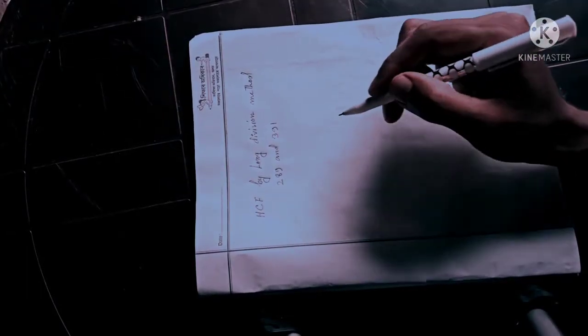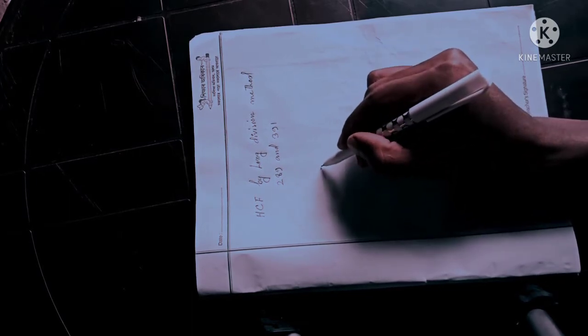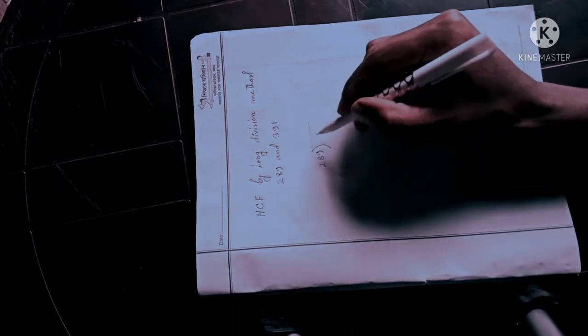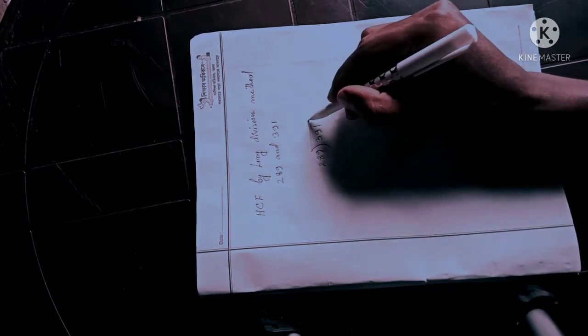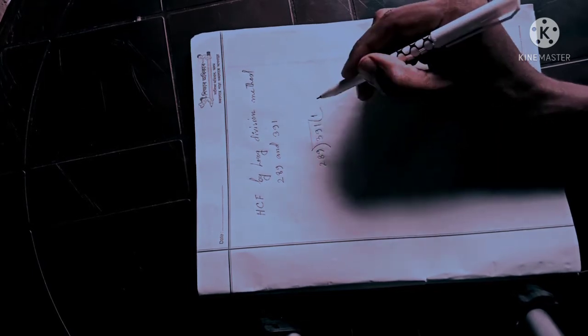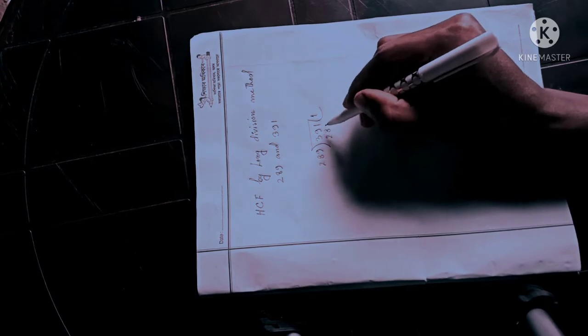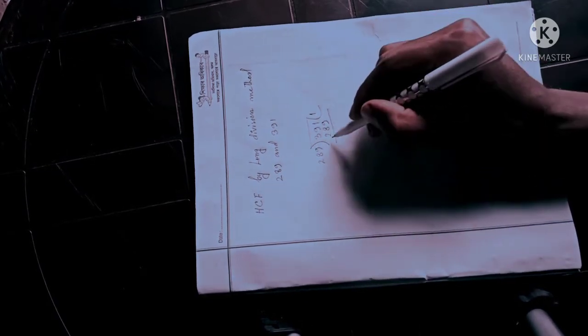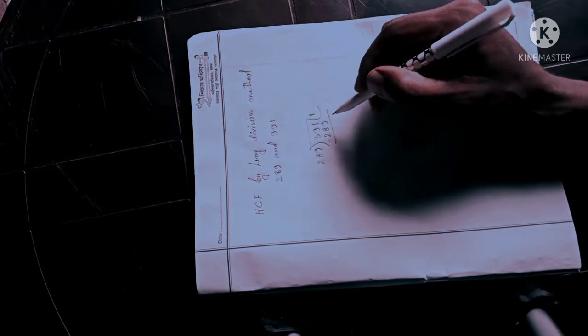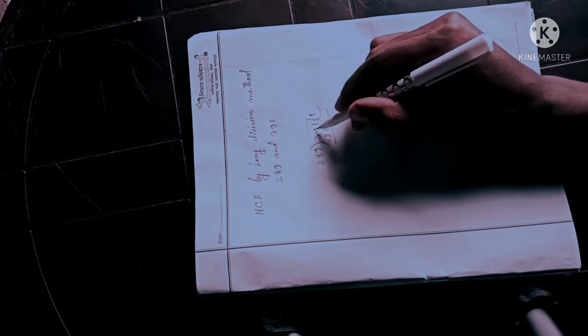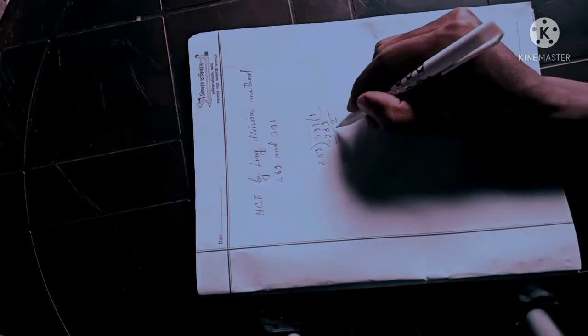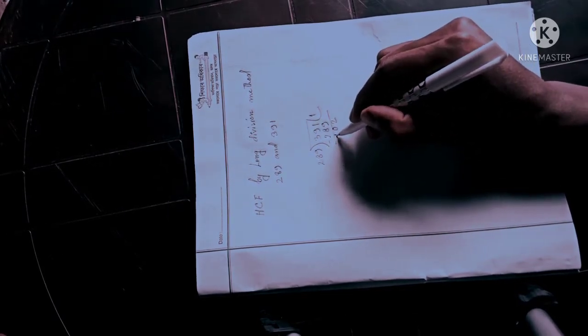Finding the HCF by long division method. Here the divisor is 289 and the dividend is 391. We have to go one time. 289 times 1 is 289. Now subtract. Carry 1 from 9 to get 11. 11 minus 9 is 2, 8 minus 8 is 0, 3 minus 2 is 1.